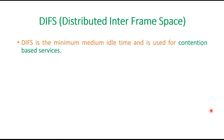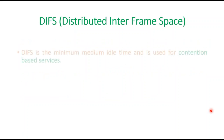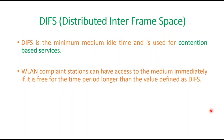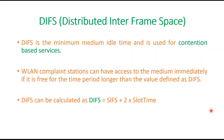DIFS — Distributed Interframe Space. DIFS is the minimum idle time and it is used for contention-based services, whereas PIFS was used for contention-free services. WLAN-compliant stations can have access to the medium immediately if it is free for a time period longer than the DIFS value. DIFS is calculated as: DIFS = SIFS + 2 × slot time.